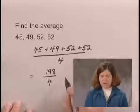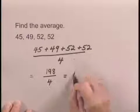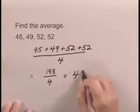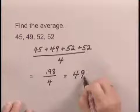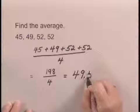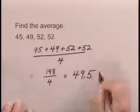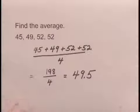When we divide by 4, we get an average of 49.5. So 49.5 is the average of those numbers.